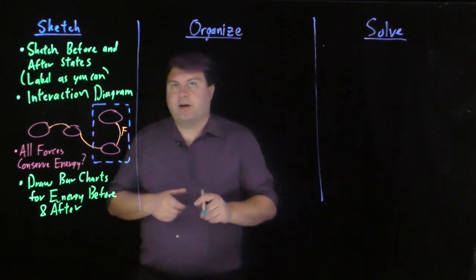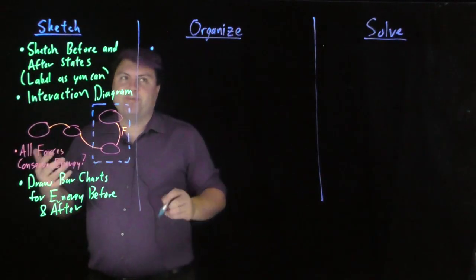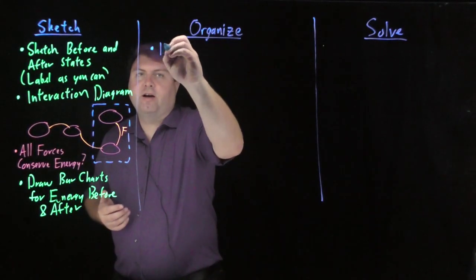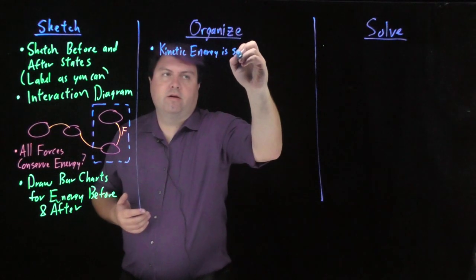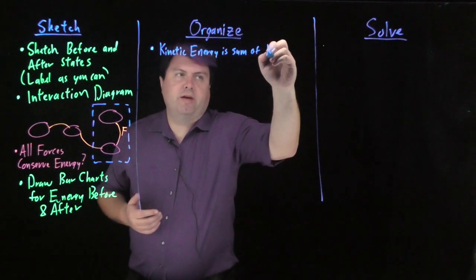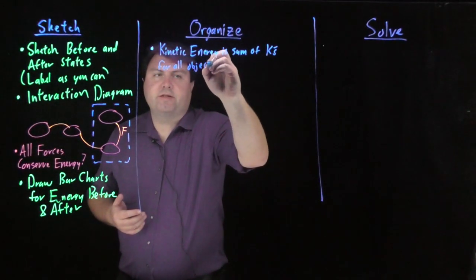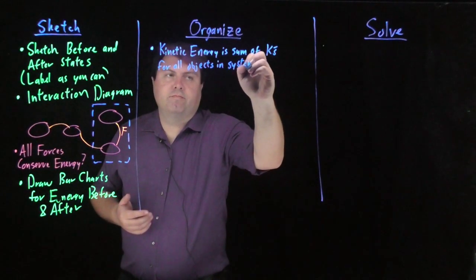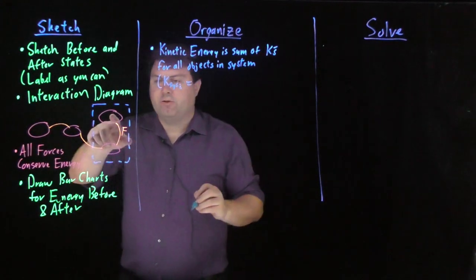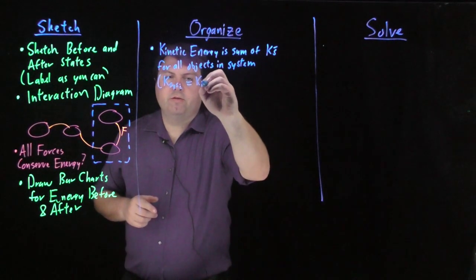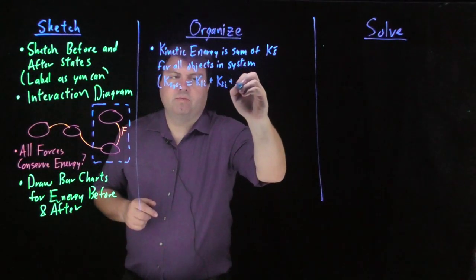As we organize our thoughts and look at this interaction diagram, it's going to tell us how we organize. Our kinetic energy is the sum of k's for all of our objects in the system. So k system initial would be k1 initial plus k2 initial, and if we had more, we'd add those too.